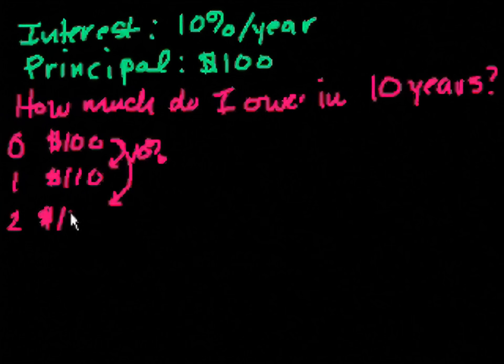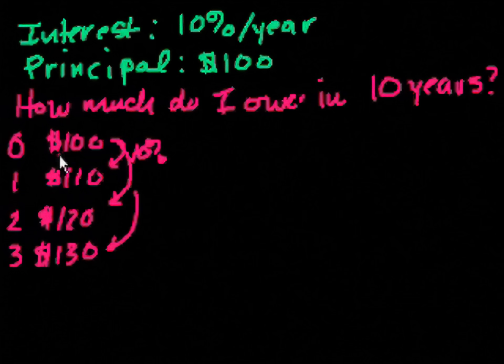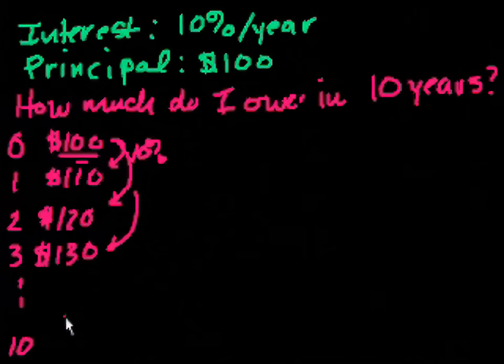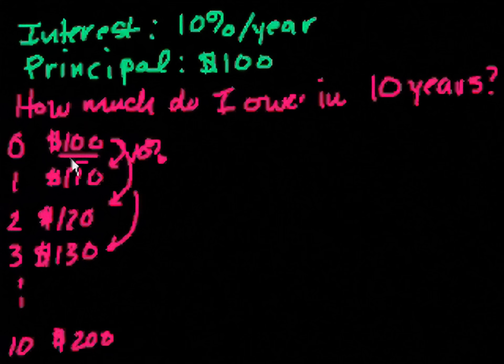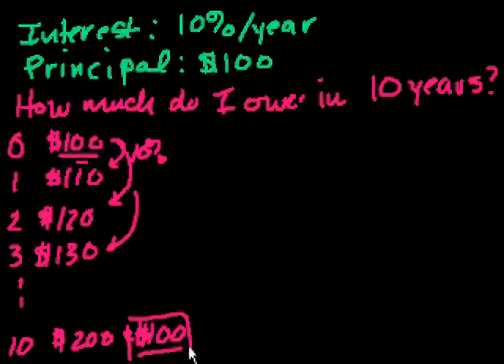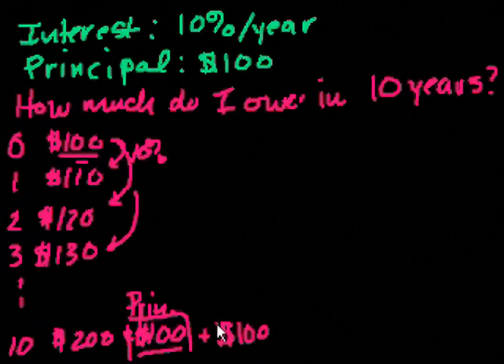And in year three, I would owe $130. Essentially, my rent per year to borrow this $100 is $10, right? Because I'm always taking 10% of the original amount. And after 10 years, because each year I would have had to pay an extra $10 in interest, after 10 years I would owe $200. And that $200 is equal to $100 of principal plus $100 of interest, because I paid $10 a year of interest.